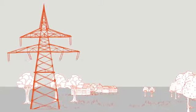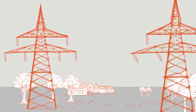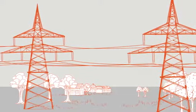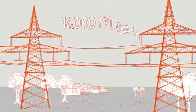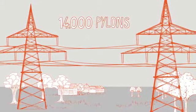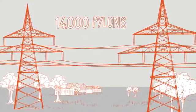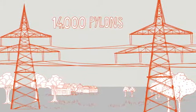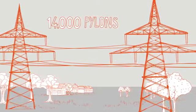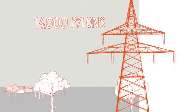One important element of overhead lines are the pylons. They carry the conductors. The 50 Hertz grid contains about 14,000 pylons. In particular, two-level pylons where the conductors are arranged in a triangle, thus forming a system or, in other words, an electric circuit.